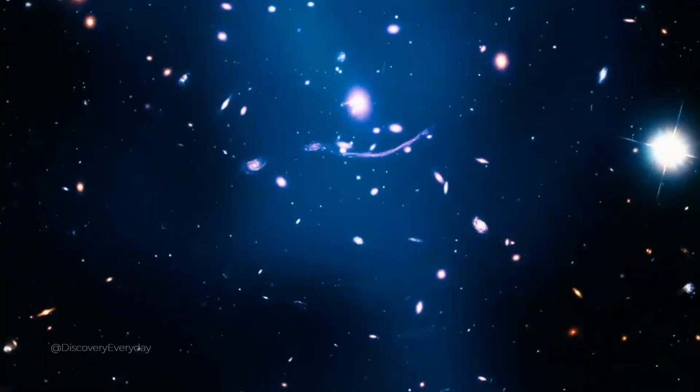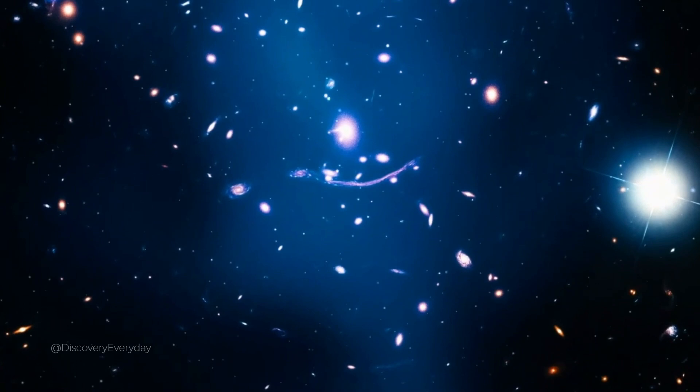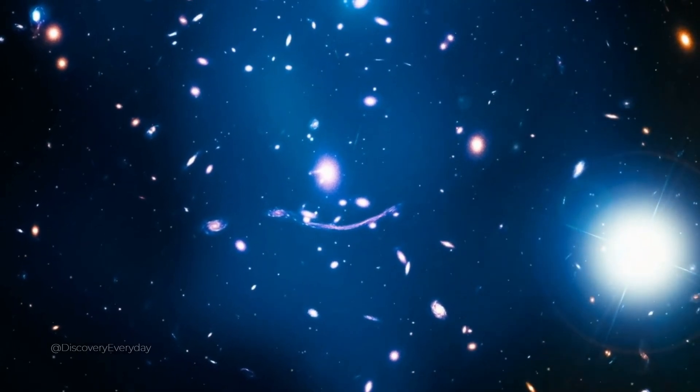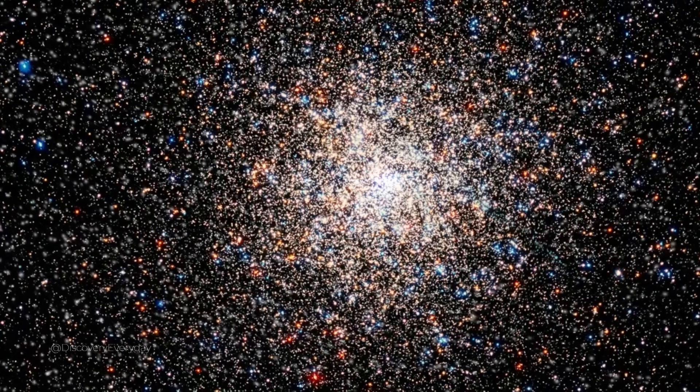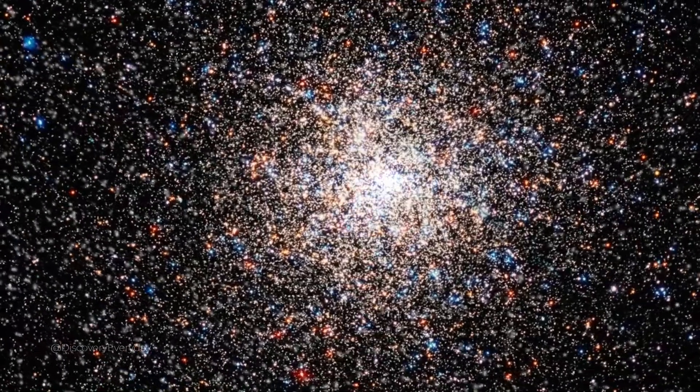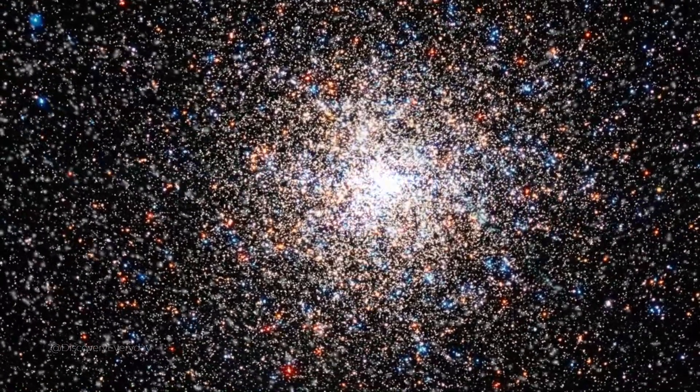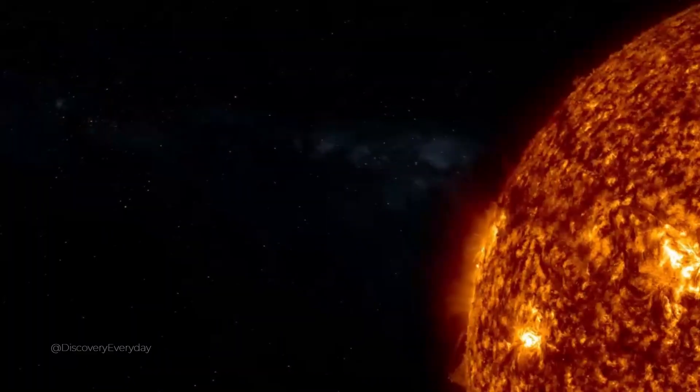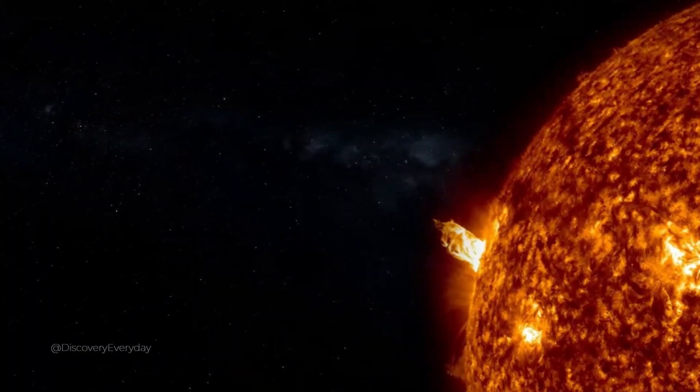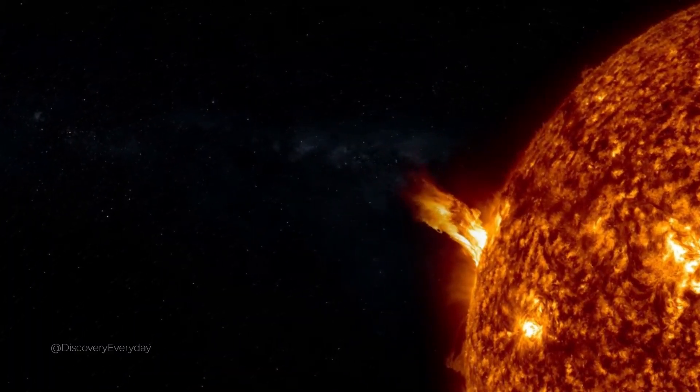Some stars you see don't exist anymore. Light is the fastest thing we know, moving at a speed of 300,000 kilometers per second. Despite traveling at the speed of light, it takes 8 minutes and 20 seconds for sunlight to reach us. Now imagine a star further away. For some stars in the night sky, you're seeing light that has traveled millions or billions of years to reach us.